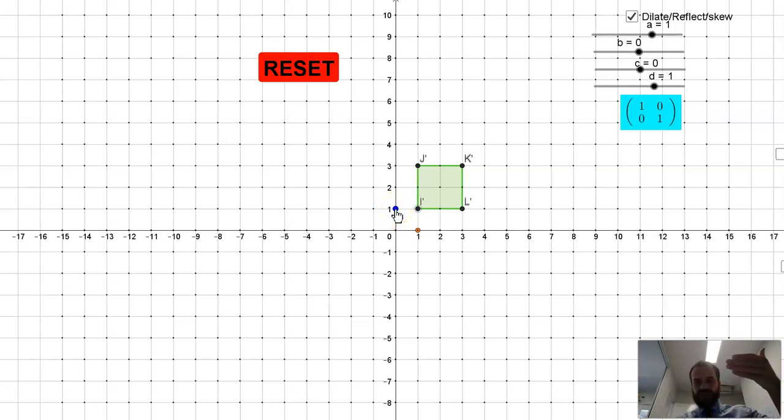If I wanted to reflect 0, 1, I would have to change that to not 0, 1, but 0, negative 1. And that's exactly what we do here.